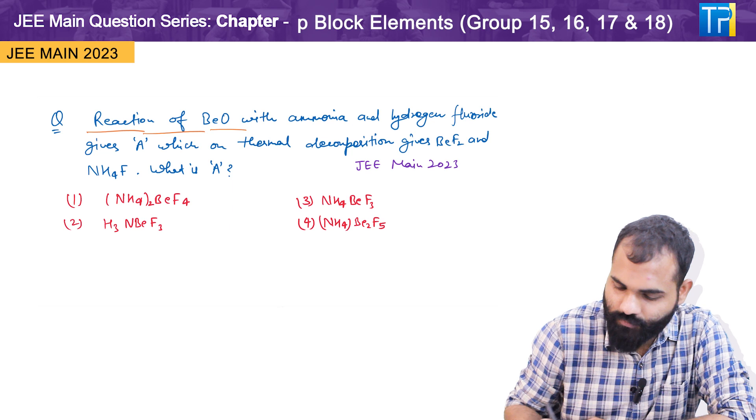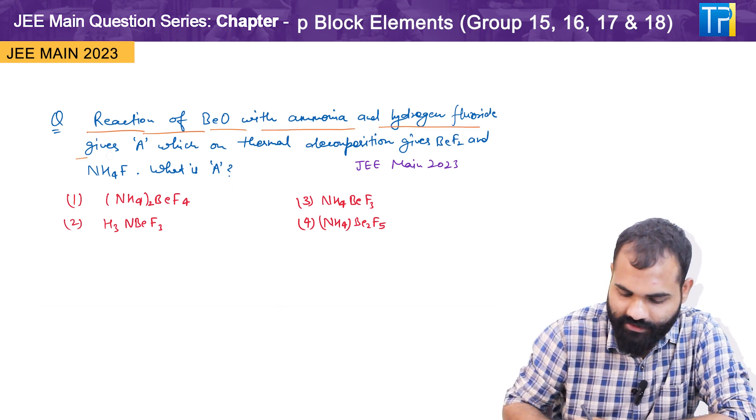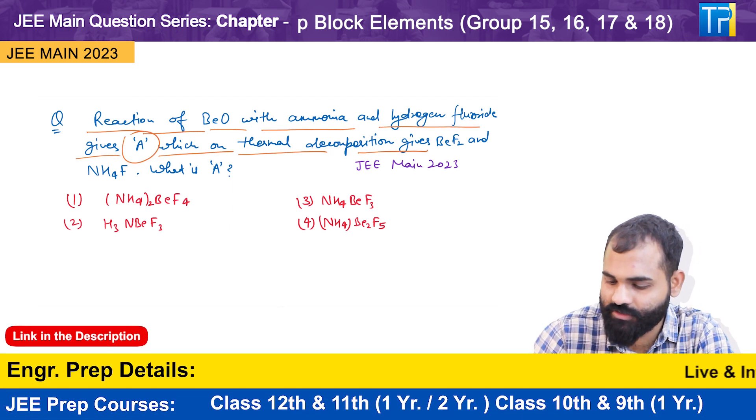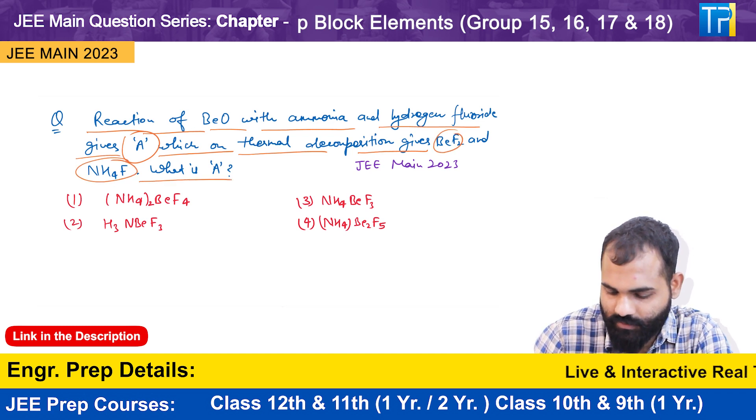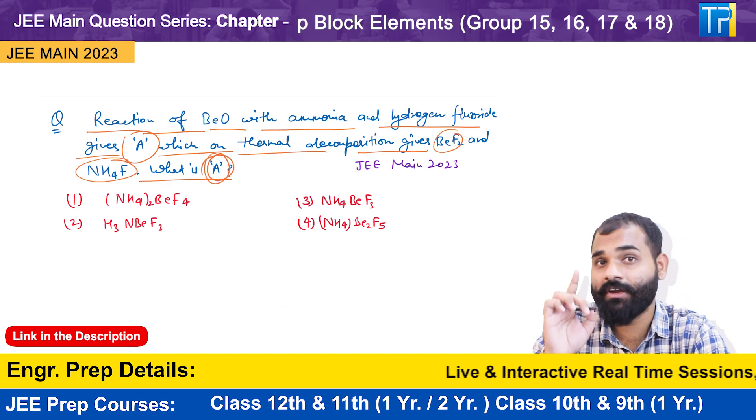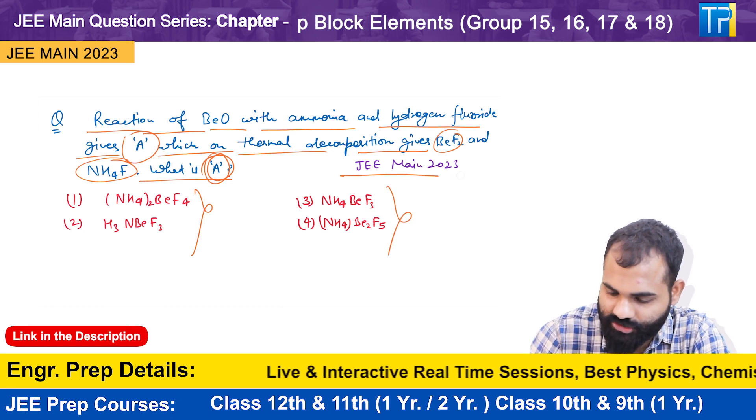The question is: Reaction of BeO with ammonia and hydrogen fluoride gives A, which on thermal decomposition gives BeF2 and NH4F. What is A? Basically we have to find A and options are given here. This question is from the JEE Main 2023.